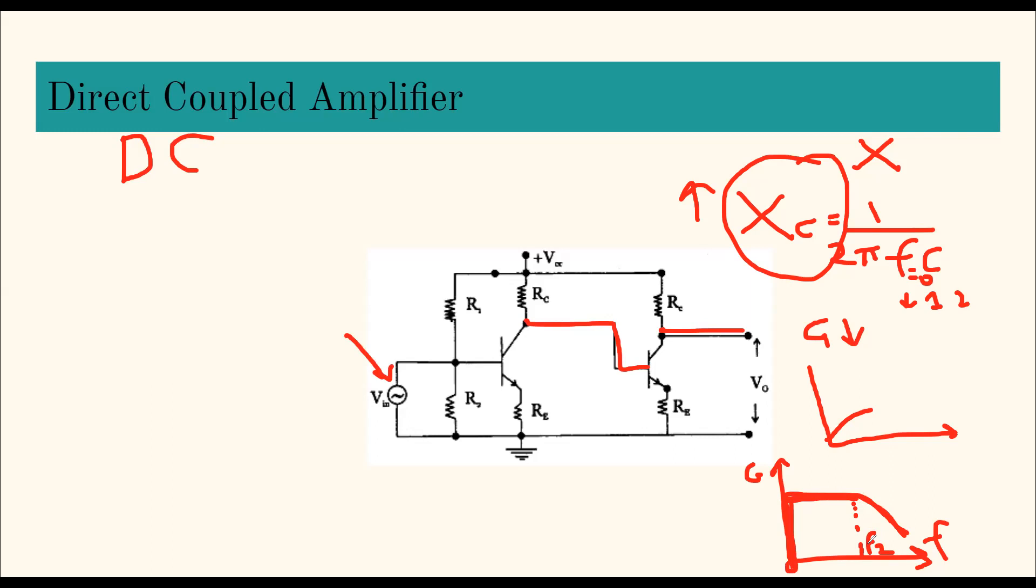And drawbacks, what can happen? Same thing - certain drawbacks are common. Beta can change with temperature, so it can change the collector current and voltage. That can affect. At high frequency, if you can see the frequency response, high frequency, the gain is getting affected. Any noise can come up, that can also affect the output of the DC amplifier.